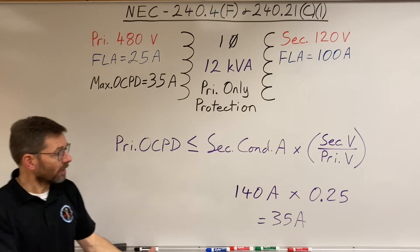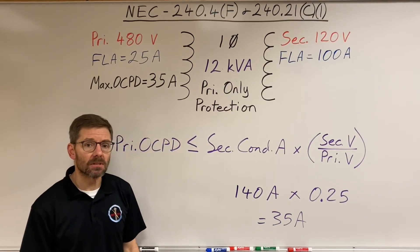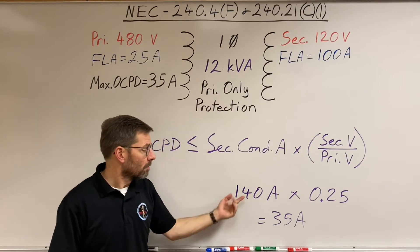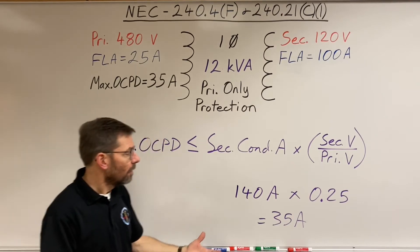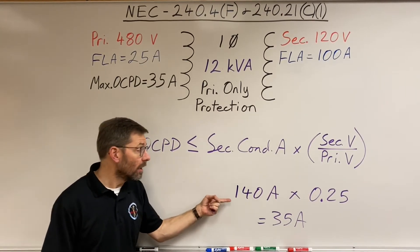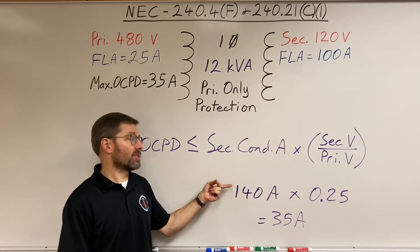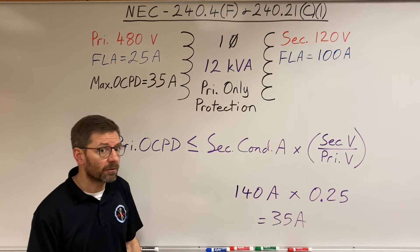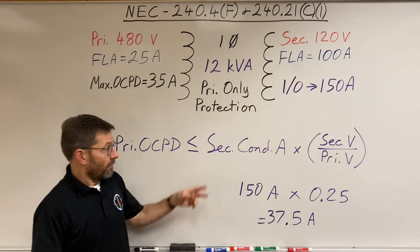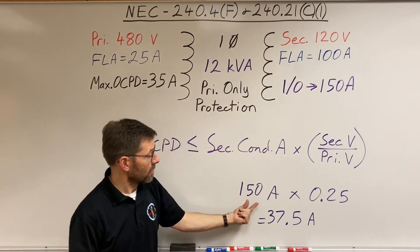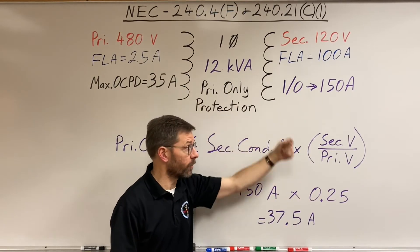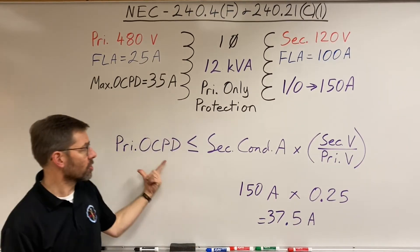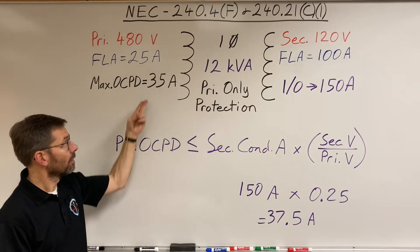So what conductor do I have that could meet 140 amps? Let's look at our ampacity table 310.16. I don't have a conductor that hits 140 amps. A number one would be 130 amps, or a one-aught would be 150 amps. So in this case, I'd have to go with a one-aught for 150 amps. And if I plug it into the formula, 150 amps times a quarter would require no bigger than a 37 and a half amp circuit breaker. The breaker would need to be less than or equal to 37.5 amps. And a 35 would work.